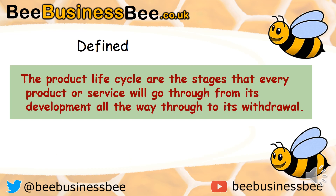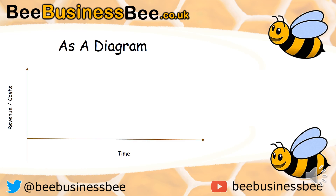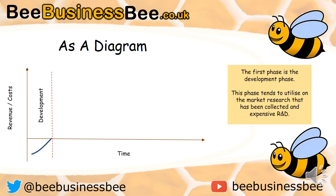The product lifecycle covers the stages that every product or service will go through, from its development all the way through to its withdrawal. An easy way to look at the product lifecycle is as a diagram. On the vertical axis we have revenue and costs, and along the horizontal axis we have time. Where they intersect is at zero, so at some stages you will actually be spending more money on the product than it generates.